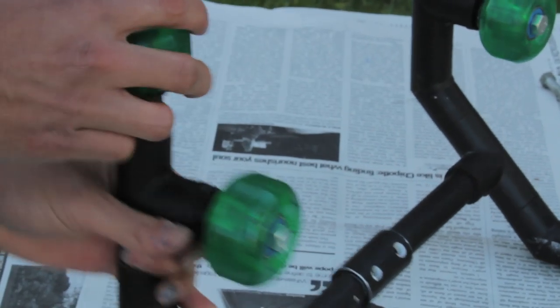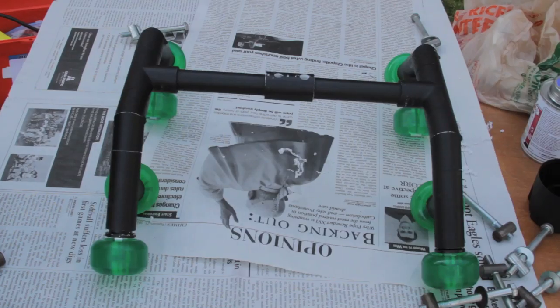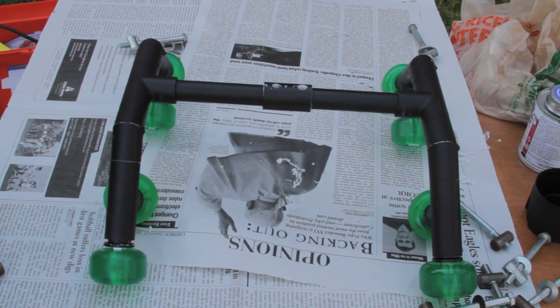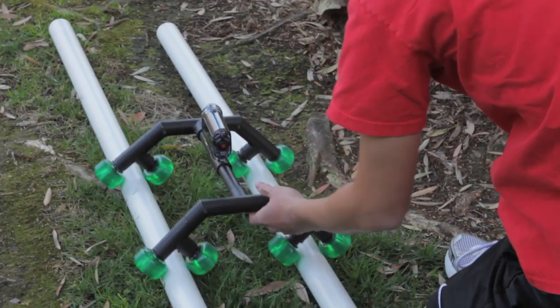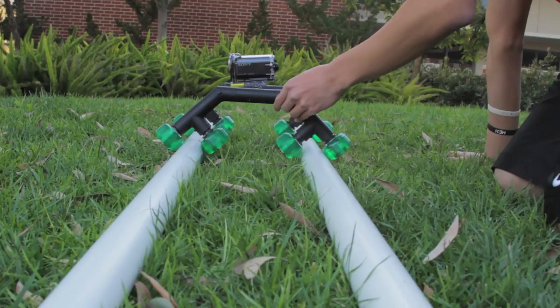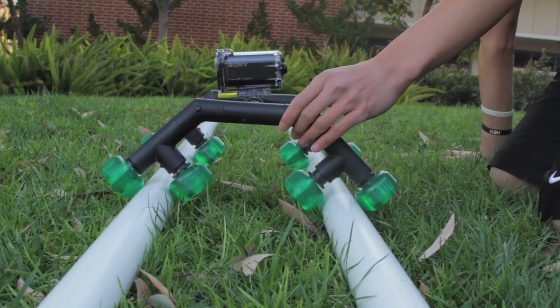Now just plug in your wheels and you're all set. Lastly, I usually use PVC pipe as tracks for the dolly so the shots are smoother. But it still works pretty well by itself on smooth surfaces. So it's up to you.